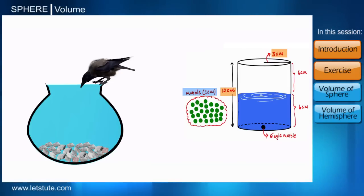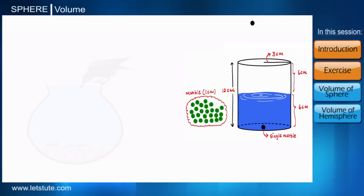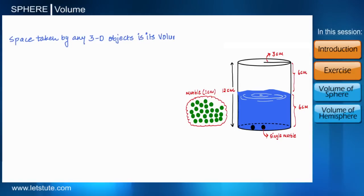Let's find out together. You know friends, when the marbles go deep inside the pot, they occupy some space and that's why the water level rises up, and that too in the same quantity as the space occupied by the marbles. And we have already learned from our previous sessions that the space taken by any three-dimensional object is the volume of that object.